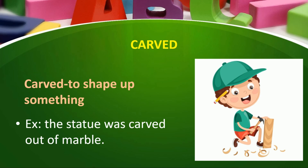Next word is carve. Carve means to shape or create something — to cut wood or stone in order to make a particular object. With the help of material like big stone or big wood, a specific shape is created. For example, the statue was carved out of marble — the statue was shaped and created out of marble.